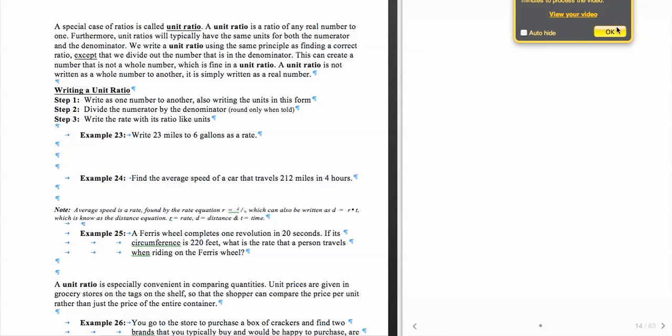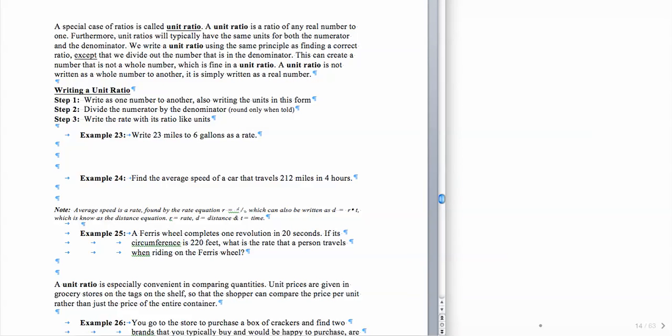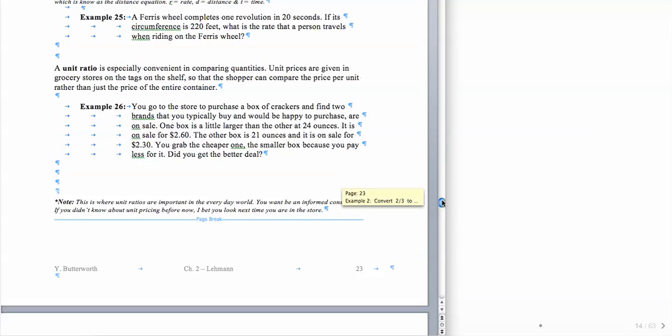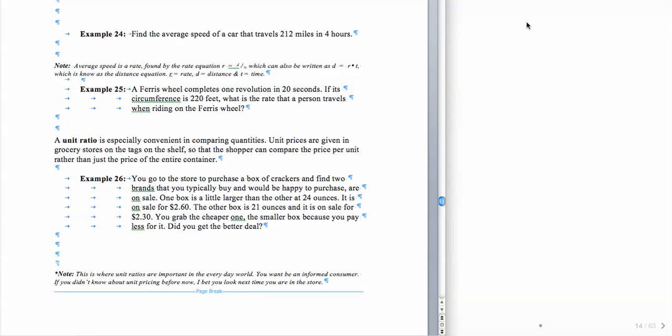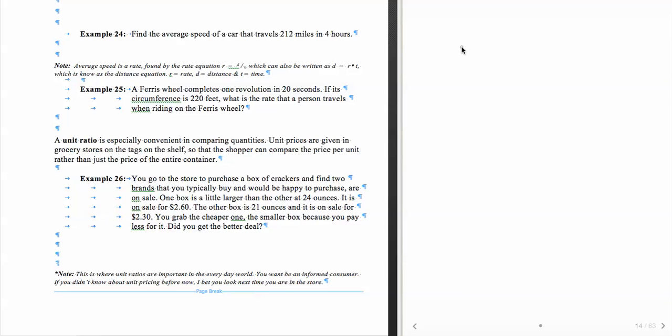Now, another thing that we could look at is a unit ratio in terms of a word problem. So let's take a look at example number 25. We go on a ferris wheel. And it completes one revolution in 20 seconds. So if its circumference is 220 feet, what is the rate that a person travels when riding on the ferris wheel? So in this example, we have an application.